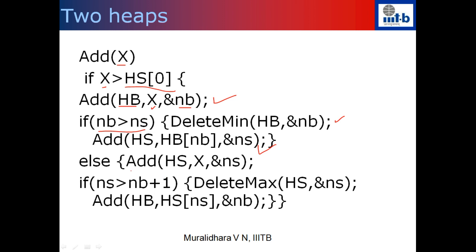If x is smaller than or equal to the median, it is added to the left-hand side heap hs. After adding, there may be an imbalance: the left side should have at most one more element than the right side. If ns is more than one greater than nb, we delete the maximum from hs and add it to hb. So for every add, we do one add for certain, and in some cases we also delete from one heap and add to the other. All operations — add, delete-min, and delete-max — are O(log n).